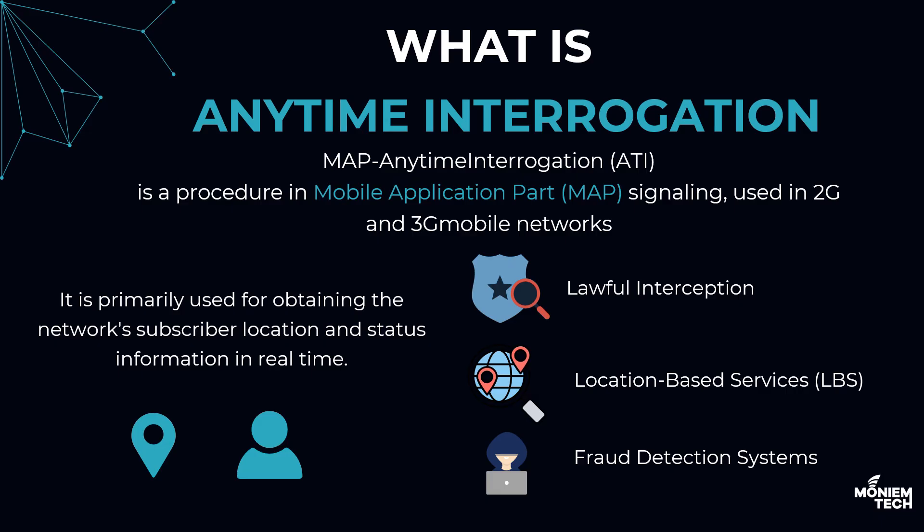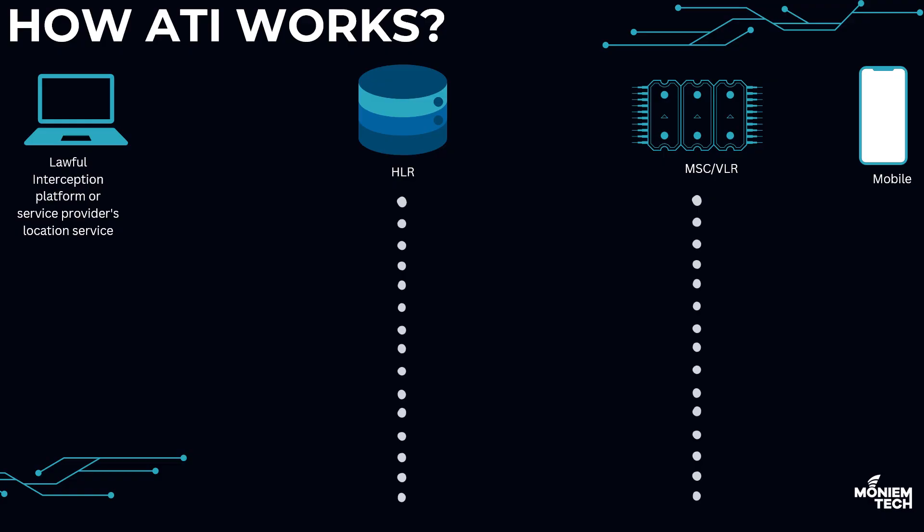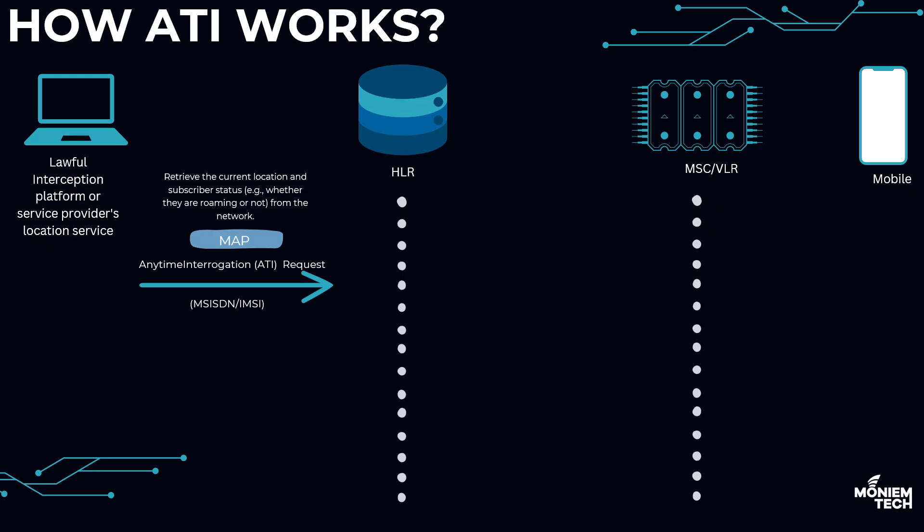Now let's look at how ATI works. As you can see in this image, we have the lawful interception application, the HLR, the MSC, and the mobile device — this is the higher-layer architecture for ATI. The location-based service application or law enforcement application sends a MAP Anytime Interrogation request to the HLR for the subscriber.